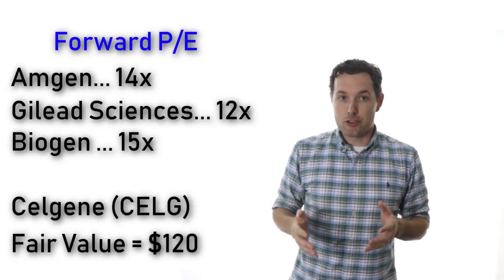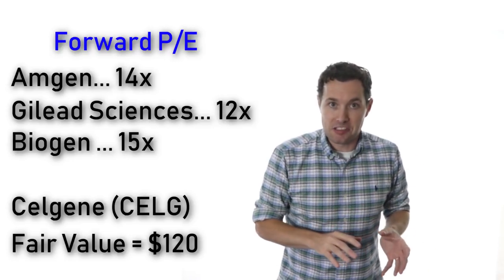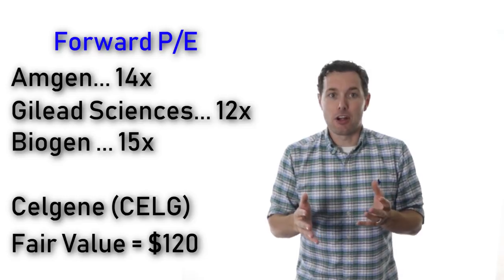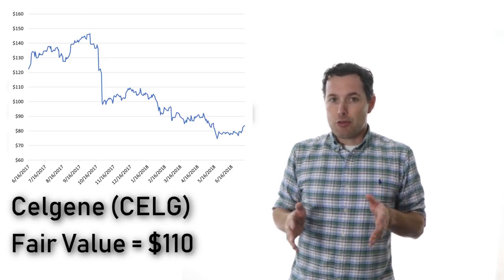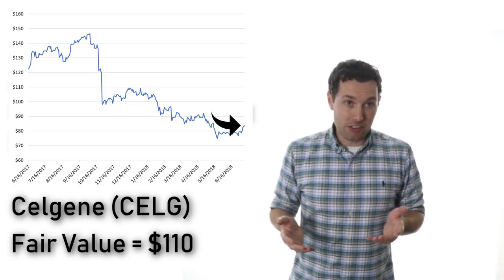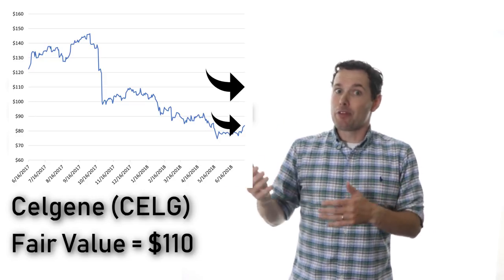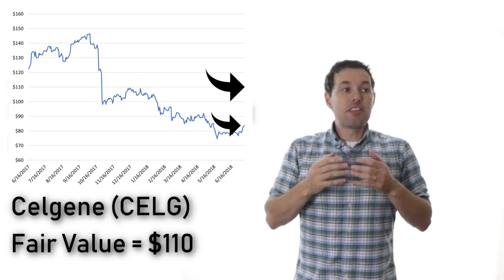That leaves us looking at a price target of about $110 a share. Now Celgene is currently trading at about $84 a share, and if it can get to $110, that's a bit over 30%, and to me it seems that this stock falls into the classic GARP category.